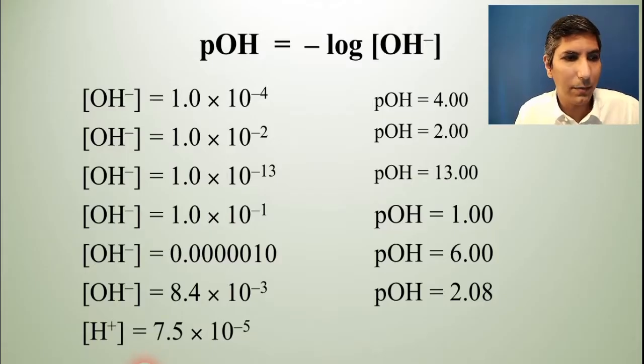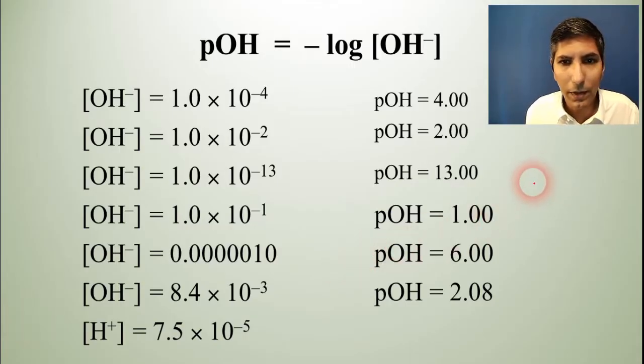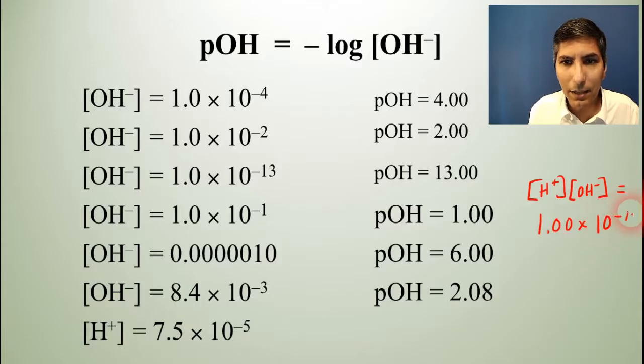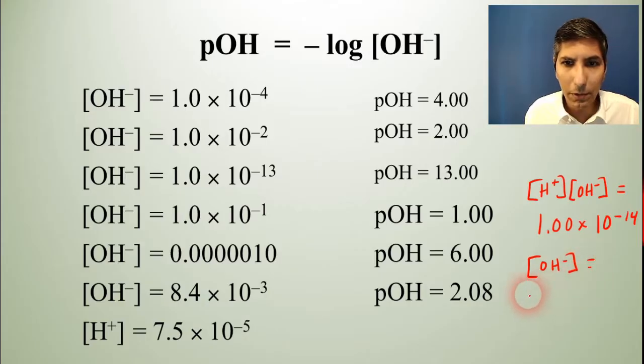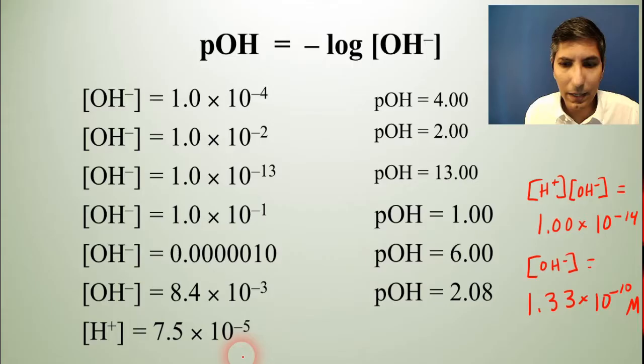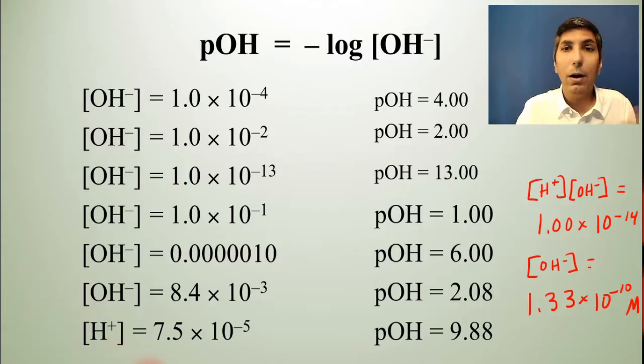Sometimes, you'll have a two-step process where you'll have H plus equals 7.5 times 10 to the negative 5th and you'll have to determine the hydroxide ion concentration first using the auto ionization of water that we learned in the last video where we said that H plus times OH minus equals 1.00 times 10 to the negative 14th or KW at 25 degrees Celsius. When you key this or plug this into that equation, you find that the hydroxide ion concentration, in this example anyway, is equal to about 1.33 times 10 to the negative 10th moles per liter. Now, you can just take the negative log of that number and you'll find that the pOH is 9.88. So, be able to work with the pOH concept as well.